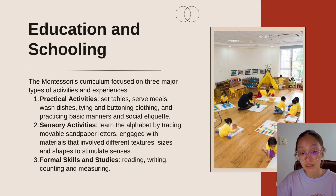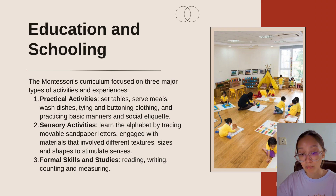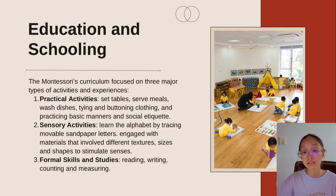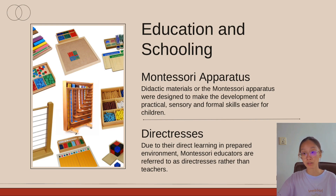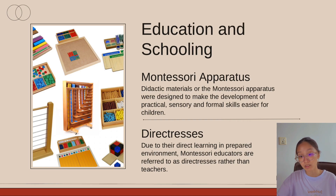Third, formal skills and studies. The curriculum also included formal skills such as reading, writing, counting, and measuring. Children learn to write before they learn to read, and they use colored rods of various sizes and cups to learn concepts of counting and measuring. Montessori schools used pre-planned teaching devices and materials, often referred to as dictated materials or the Montessori apparatus. This material was designed to make the development of practical, sensory, and formal skills easier for children. Montessori educators are referred to as directors or directrices rather than teachers, and under their guidance, children use the Montessori apparatus to develop specific skills, sensory experiences, or intellectual outcomes.